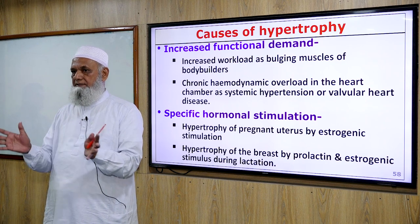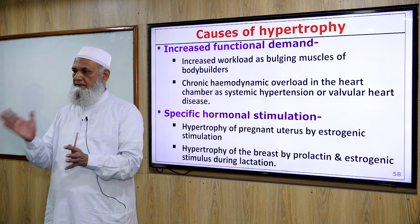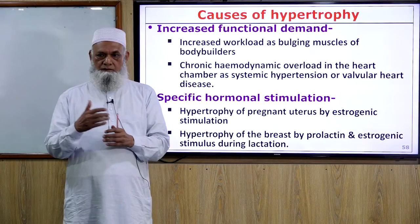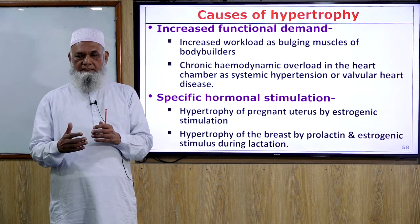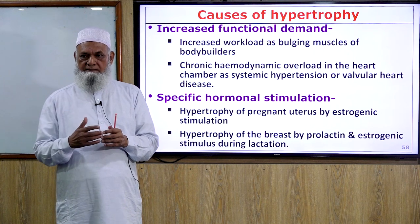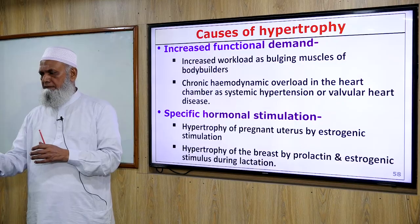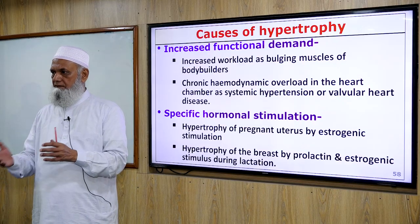The cardiac muscle is a permanent cell and cannot proliferate. In heart disease such as aortic stenosis, mitral stenosis, and regurgitation, the heart adapts by increasing cell size, leading to hypertrophy.